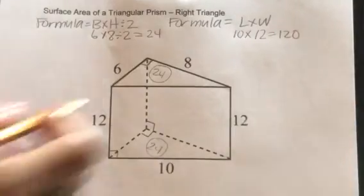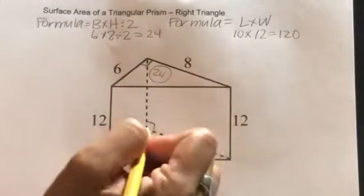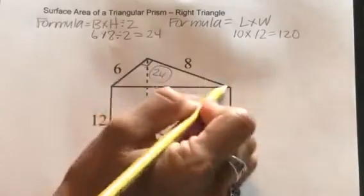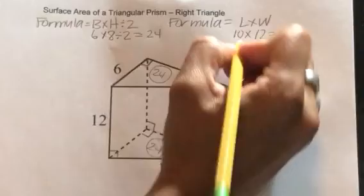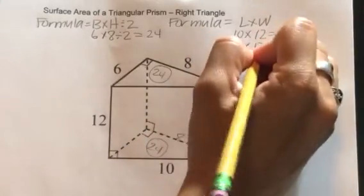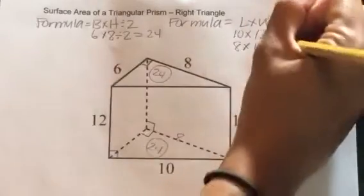Next, I'm going to do this rectangle on this side. So here's the length. I don't see it down here, but if I look up, it matches with that eight. So I'm going to do eight times the width, which is also 12. And eight times 12 is 96.